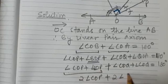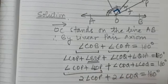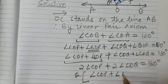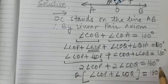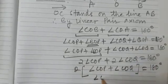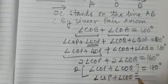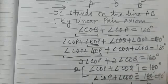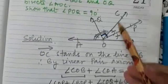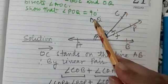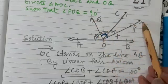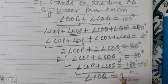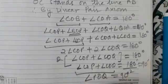This gives us 2 times angle COP plus 2 times angle COQ equals 180 degrees. Taking 2 common: angle COP + angle COQ = 90 degrees. Now, angle COP + angle COQ is simply angle POQ. Therefore, angle POQ = 90 degrees. I hope that is clear to you.